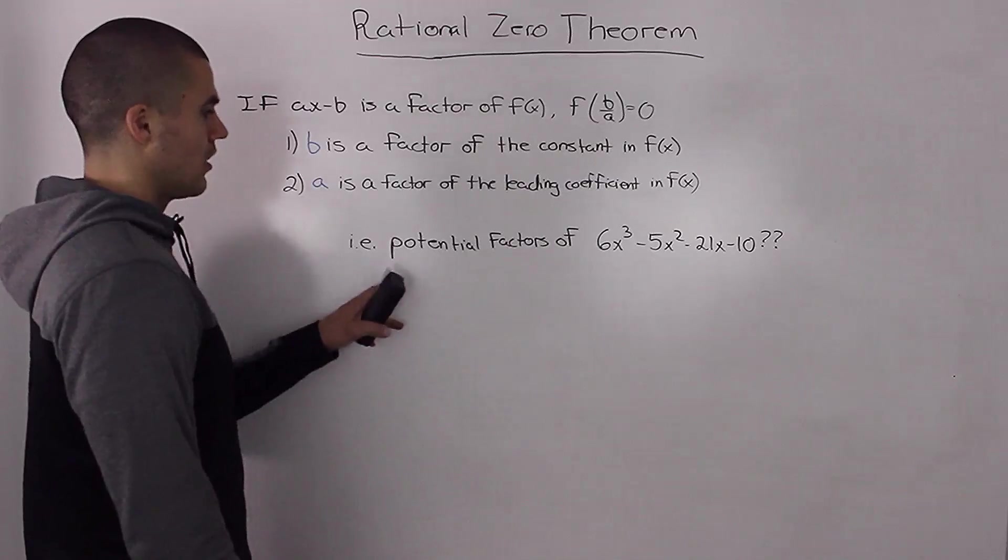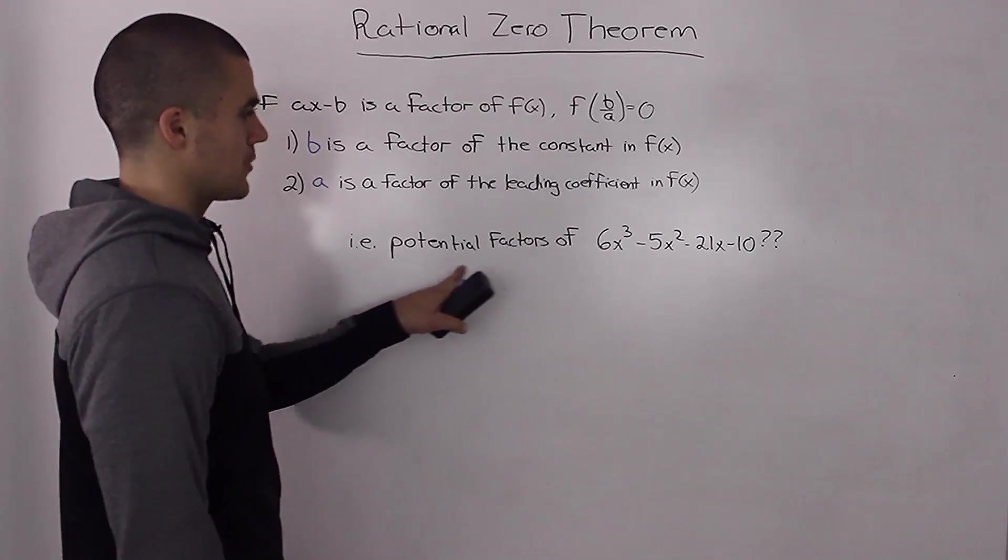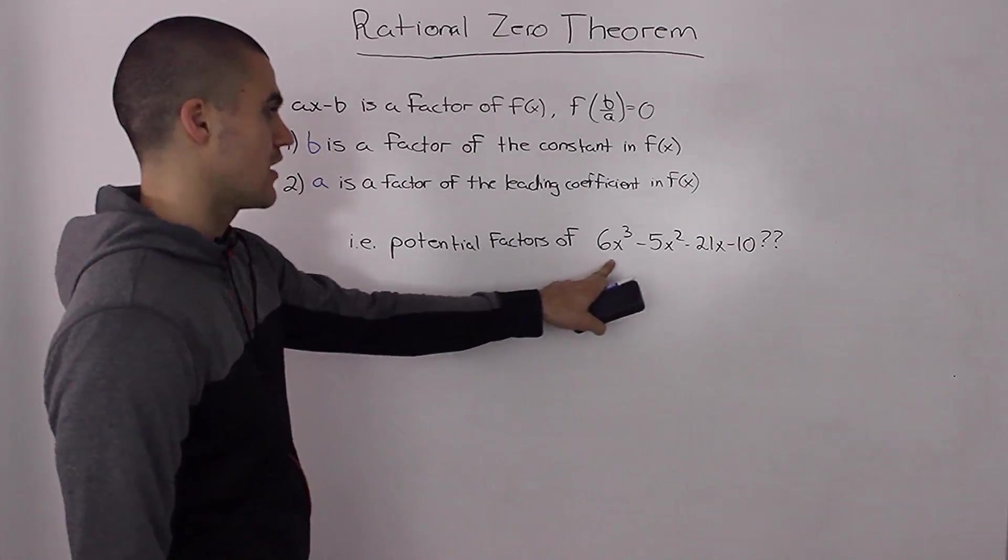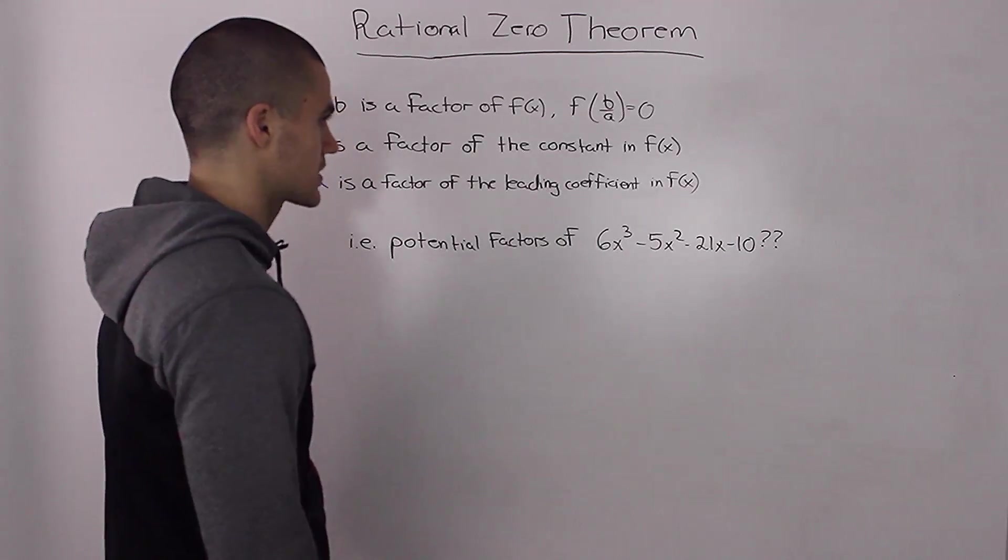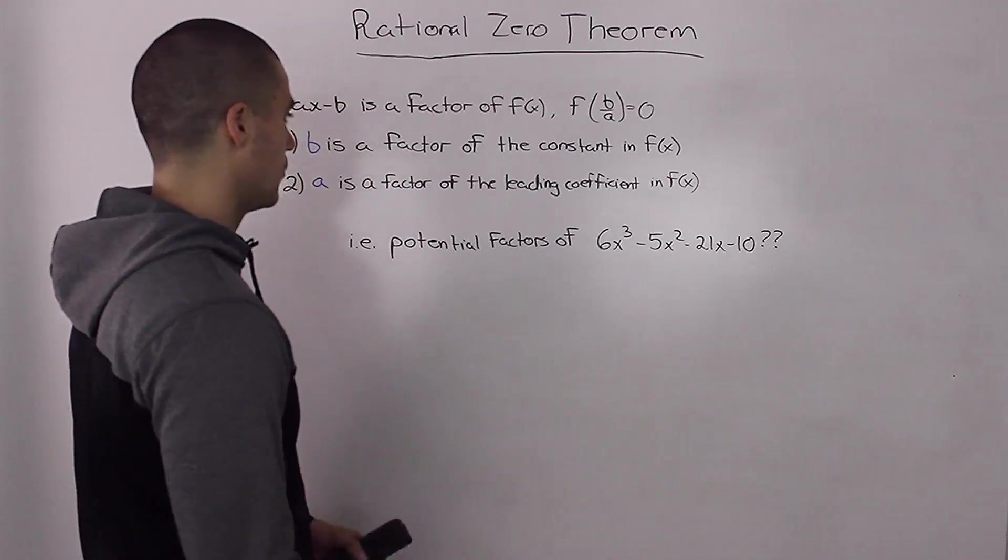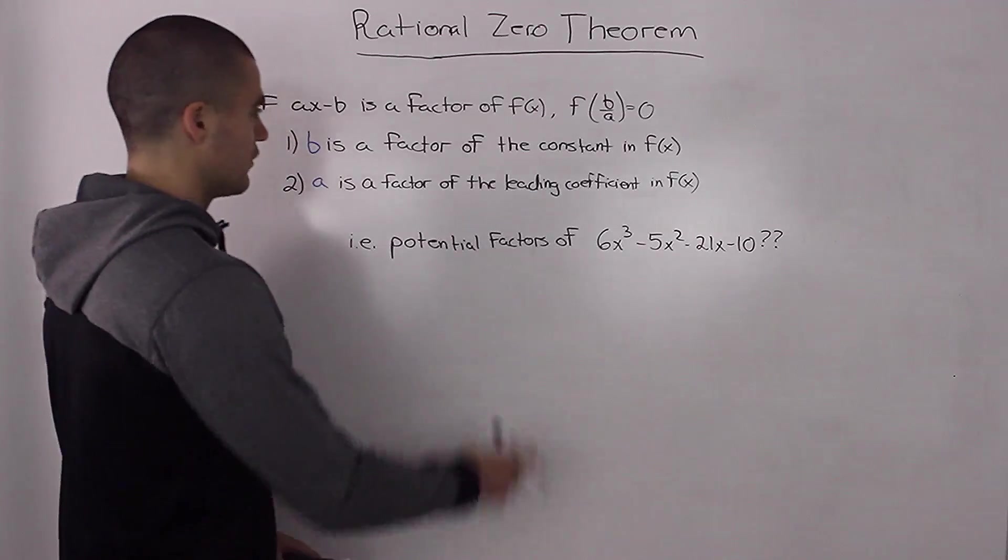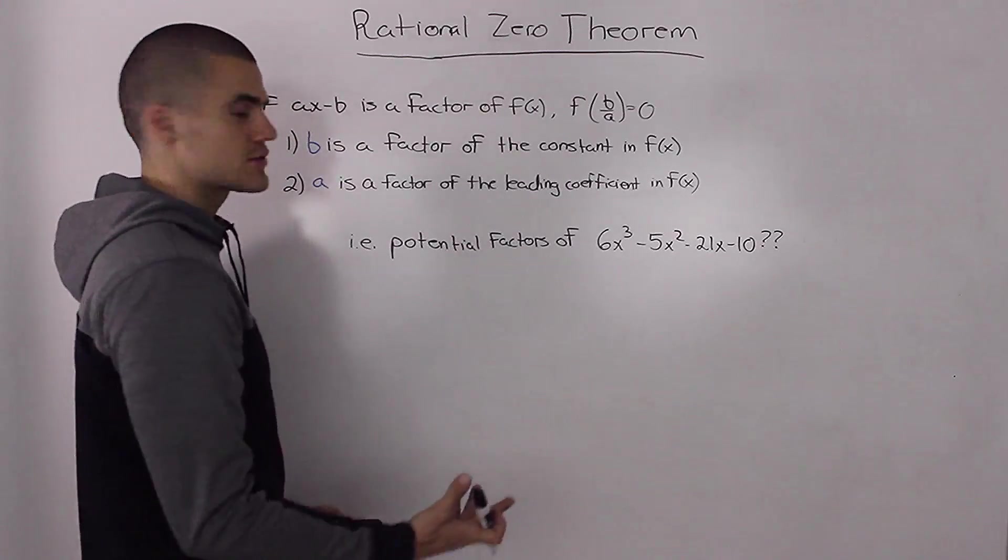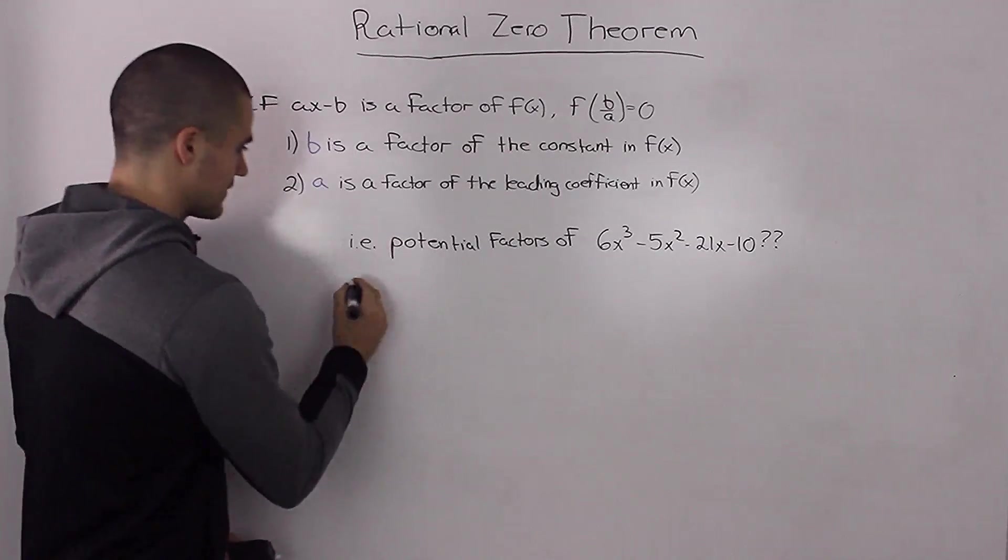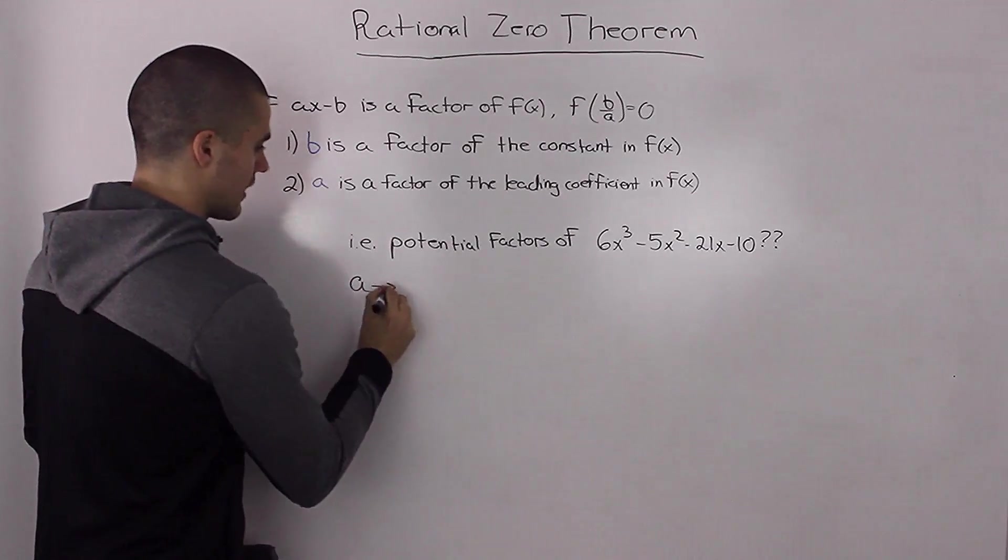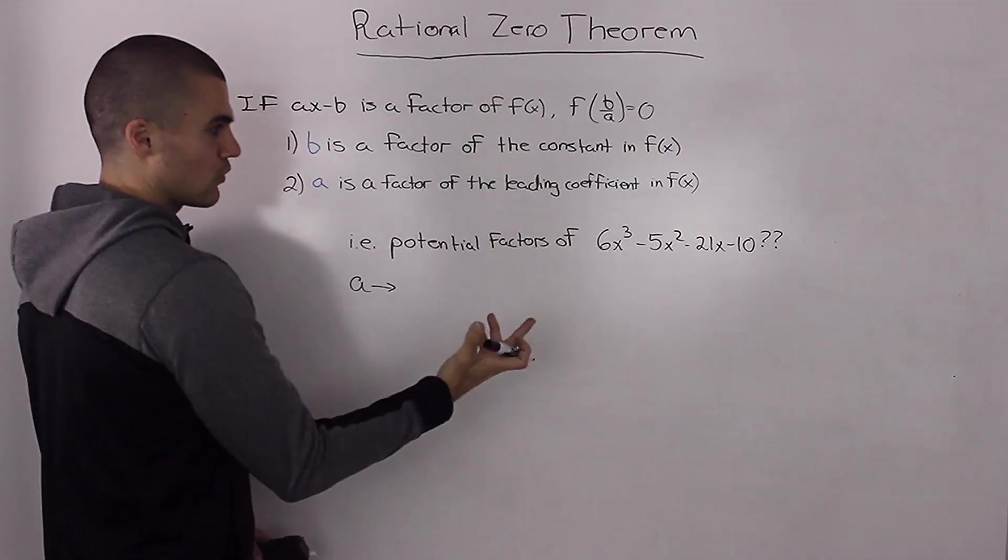For example, if we are asked to list out potential factors of this polynomial, 6x³ - 5x² - 21x - 10, what would they be? Well, the factors are going to be linear, so they're going to be in the form ax minus b.